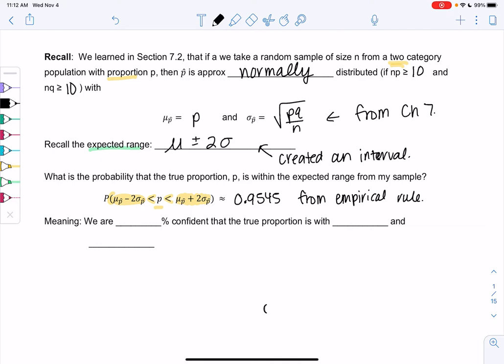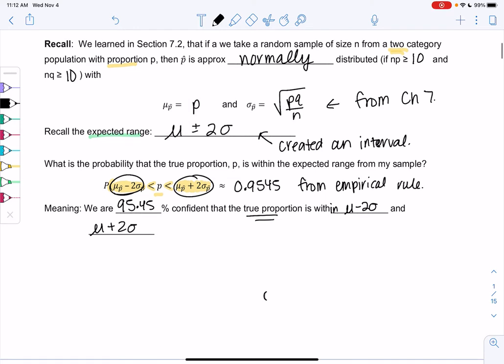And so this oddly translates into this new thing called a confidence interval. We've already learned these numbers and these formulas. We're just going to interpret it a little bit differently. So we are 95.45 percent confident that the true proportion is within these two numbers, mu minus 2 sigma and mu plus 2 sigma. So just a new interpretation of the expected range.